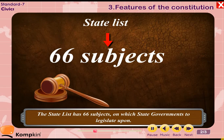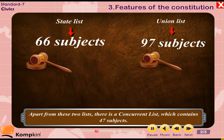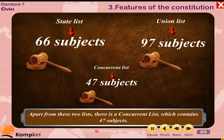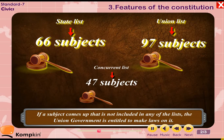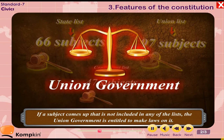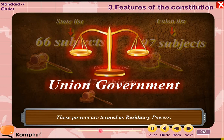The state list has 66 subjects on which state governments can legislate. Apart from these two lists, there is a concurrent list which contains 47 subjects — both governments can make laws on subjects included in this list. If a subject comes up that is not included in any of the lists, the union government is entitled to make laws on it. These powers are termed as residuary powers.